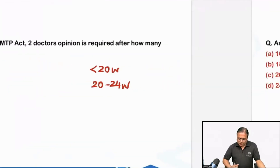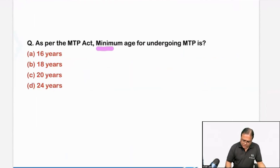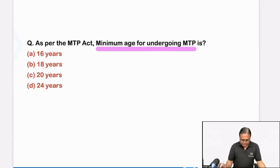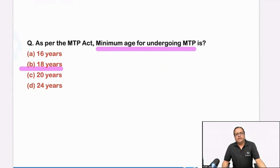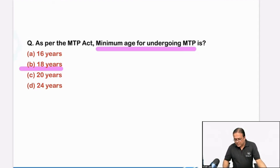Were there two questions from MTP Act of India? They also asked the minimum age for undergoing MTP. What the MTP Act says — the minimum age for undergoing MTP is 18 years. But in cases of minors, consent has to be taken from the legal guardian. Students told me nothing was mentioned about consent in the question. Look, the minimum age generally is 18 years, but below that it is also permissible — no defined lower limit in the MTP Act of India. Below 18, it can be done with consent from a legal guardian.